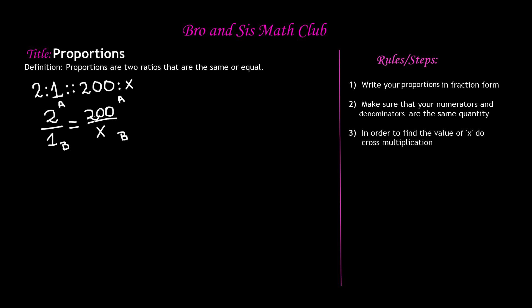The last step says: in order to find the value of X, do cross multiplication. All you're going to do is multiply a numerator and a denominator from alternate ratios. That means multiply the numerator of the first ratio by the denominator of the second, and vice versa. So multiply 2 by X and 200 by 1. That gives us 2X equals 200, because any number times 1 is that number.